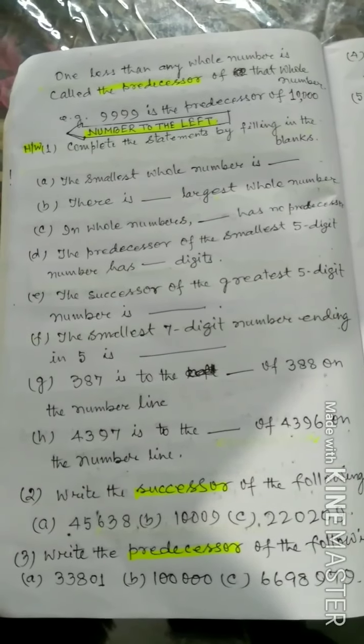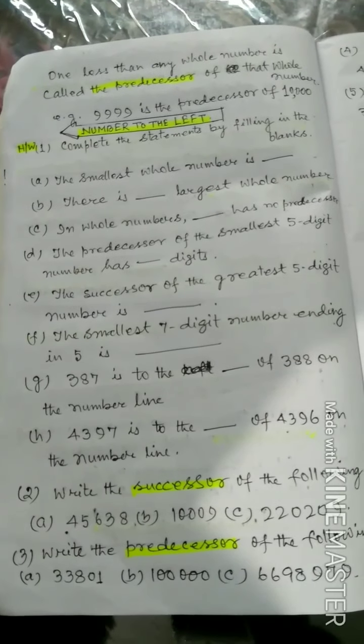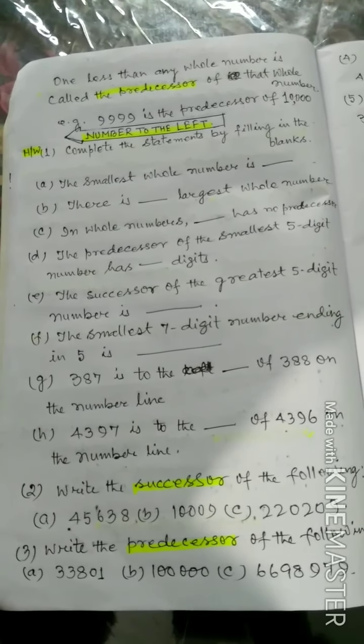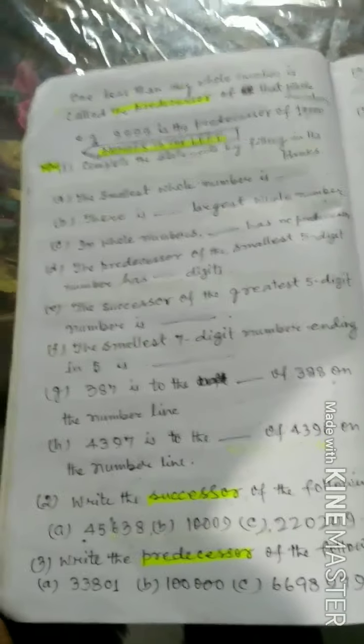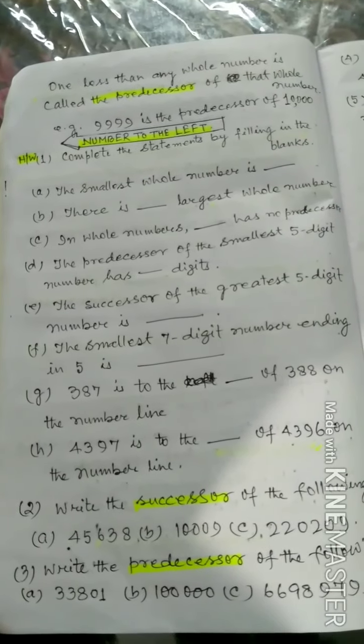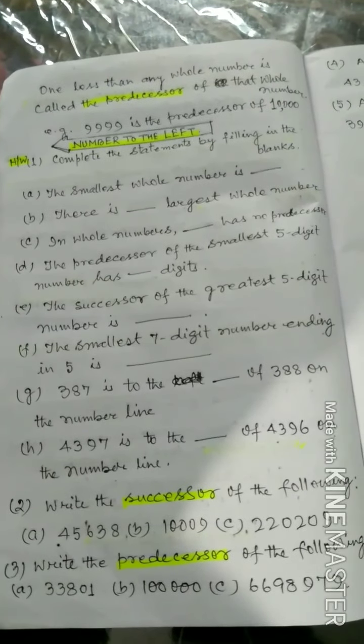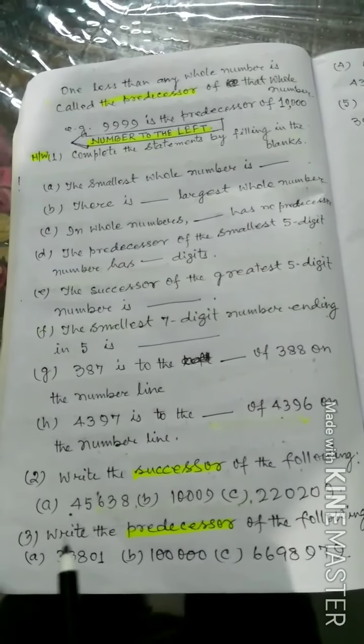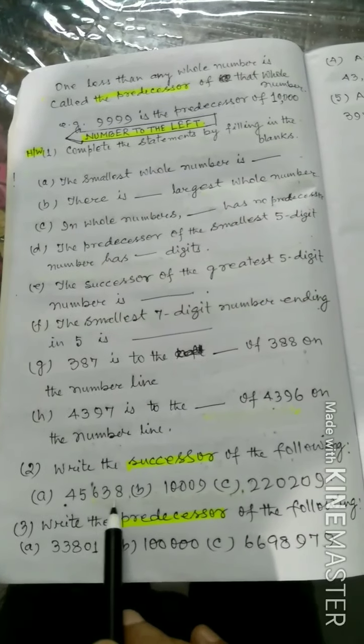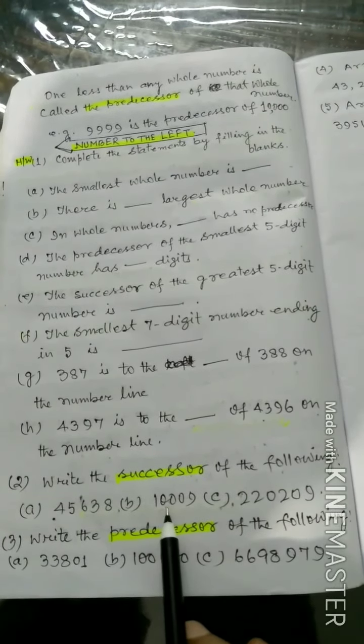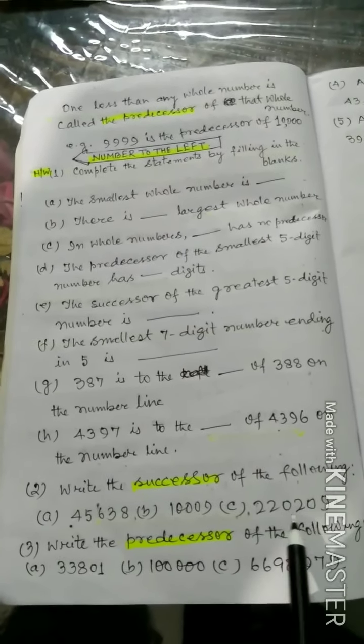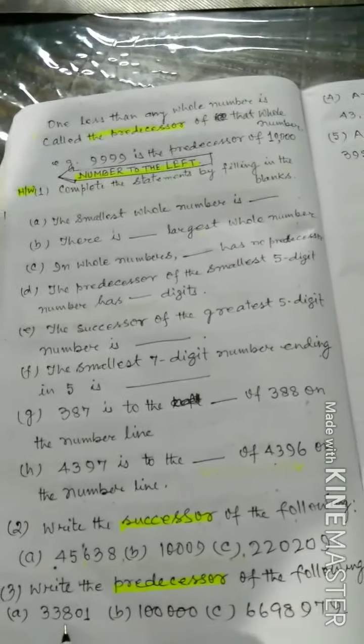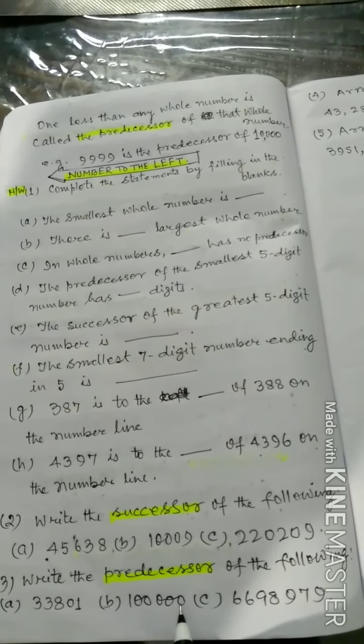The smallest 7-digit number ending in 5 is 1,000,005. 387 is to the left of 388 on the number line. Question 2: Write the successor of the following: (a) 45,638, (b) 10,009, (c) 2,020,209. Write the predecessor of the following: 33,801. The predecessor of 1 lakh. The predecessor of 66,98,979.